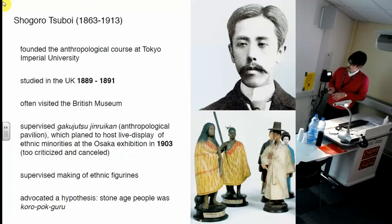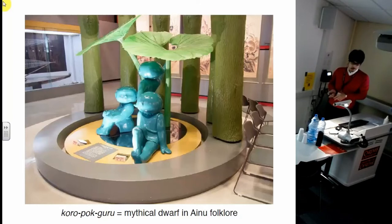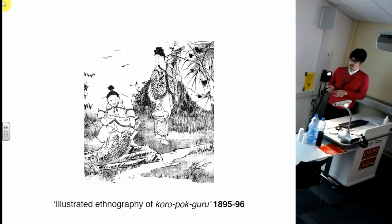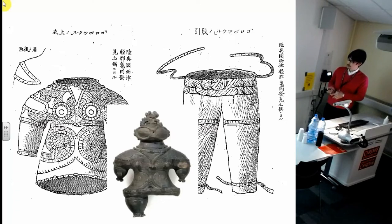He advocated the hypothesis that Stone Age people were Koropoku. Koropoku is a mystical dwarf in Ainu folklore, living under the leaf. Ainu are indigenous people in Japan, living in the northern part of Japan. In this image supervised by Shogoro Tsuboi, the fish looks too big because in his hypothesis, ancient people should be small. But his visualization was based on actual archaeological findings at that time.